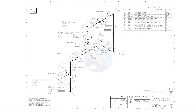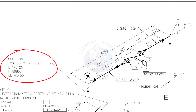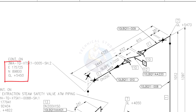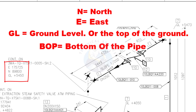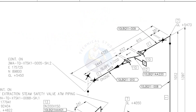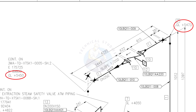Let us go to the drawing. This drawing is the continuation of the previous drawing. See the coordinates — N means north, E means east, and GL means ground level, which is the top of the ground. GL and BOP are the same here; BOP means bottom of the pipe. D 250 means the nominal diameter of the pipe is 250, which is equal to 10 inch NB. Slope 1 is to 200 means the pipe is sloped 1 millimeter in every 200 millimeters — so for a 1000 mm length pipe, the slope is 5 millimeters. Compare these two levels and write down the slope in the comment box.